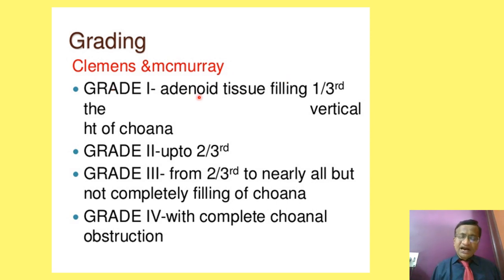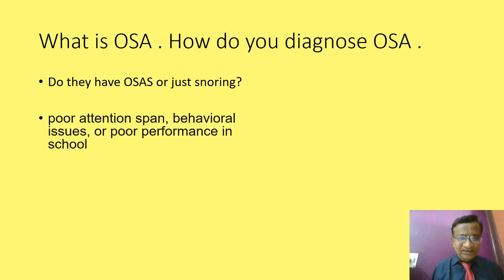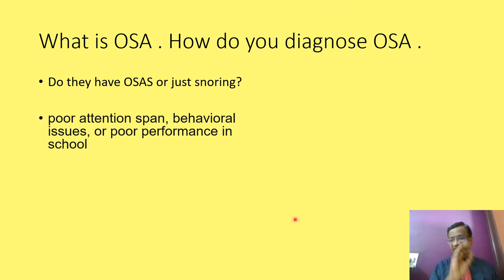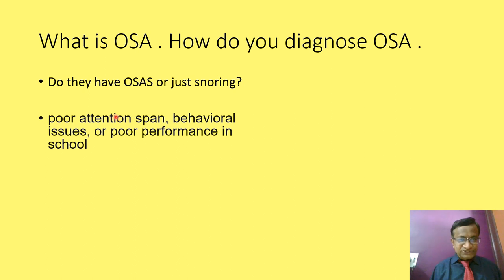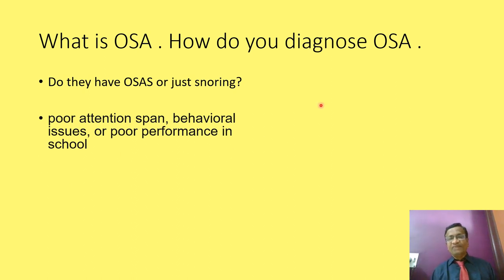There is also Glatmann's adenoids with complete choanal obstruction. Now, in adenotonsillitis we must diagnose whether the patient has simple snoring or OSAS. OSAS is the more serious side. Poor attention span, behavioral issues, and poor performance in school all point to a bad prognosis or severe OSA.